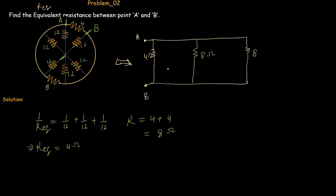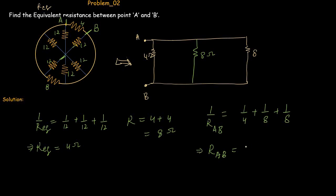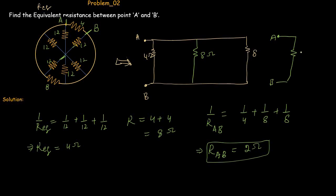Analyzing the final network, we now have three resistors in parallel between point A and point B: the 4 ohm resistor, the 8 ohm resistor, and the 8 ohm series equivalent. So 1/R_AB = 1/4 + 1/8 + 1/8. Calculating this gives R_AB = 2 ohms. Therefore, the equivalent resistance between point A and B is 2 ohms.